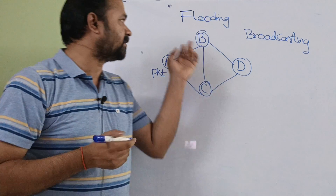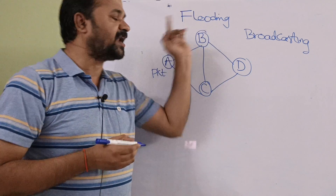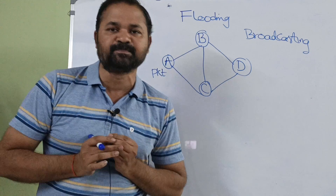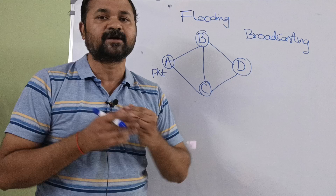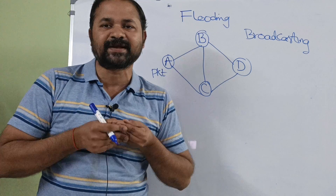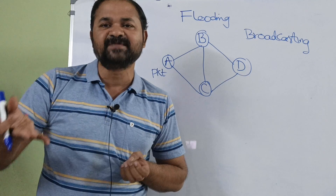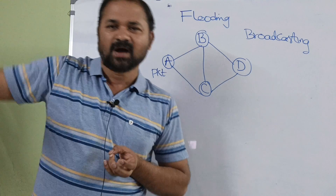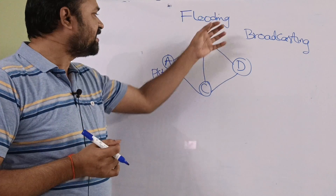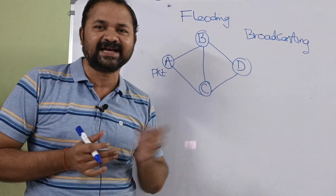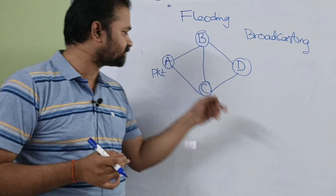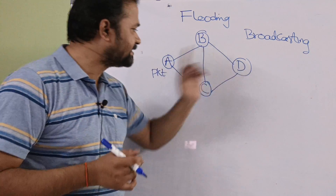Let us discuss about flooding. Flooding is a routing algorithm. Flooding means broadcasting — transmitting a message to all the stations, all the devices. Let's say we have a network like this, where we have four routers: A, B, C, and D.